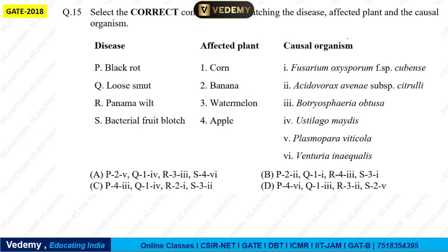Next: Select the correct combination matching disease, affected plant, and causative organism. Diseases listed are black rod, loose smut, panama wilt, and bacterial fruit block. The answer is C. You can match and list these out. It's worth noting that disease-related questions repeat frequently in GATE — so reviewing previous year questions from this area is very useful.